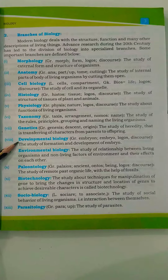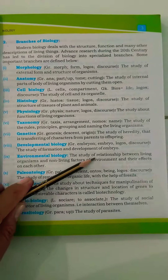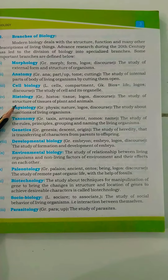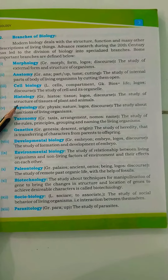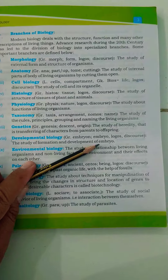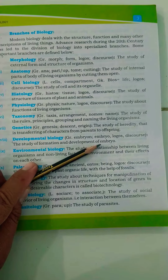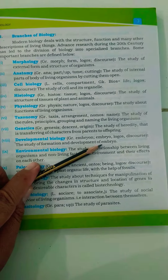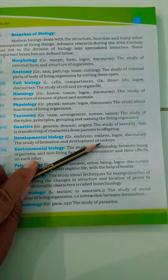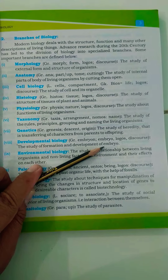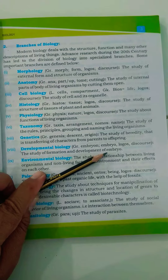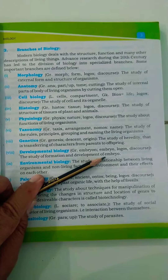First of all we need to understand what an embryo is. An embryo is the complete cell or complete zygote which is formed due to the fusion of two gametes — sperm and egg. When sperm and egg fuse together they form the zygote. When the zygote starts dividing it forms the embryo, and this embryo continuously develops and changes into the new young one.